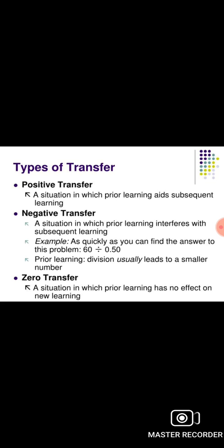The next type is zero transfer. Zero transfer is when prior learning has no effect on new learning. For example, when you are playing cricket and then play table tennis or volleyball, there is no transfer between those learning situations — that is zero transfer.